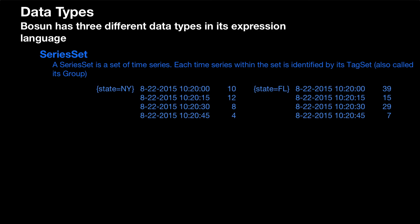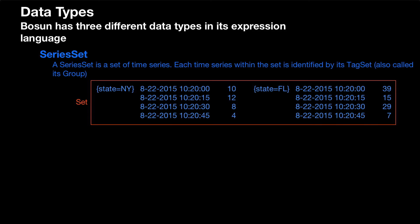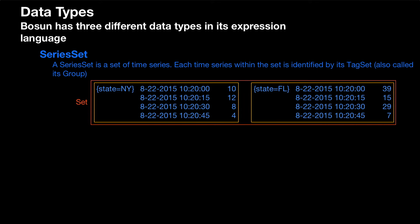And then again we have another one — state equals Florida. That's our tag set. Tag sets are tag keys and value pairs. So this whole thing is our series set, and then we have items within the series set, each identified by its tag set.